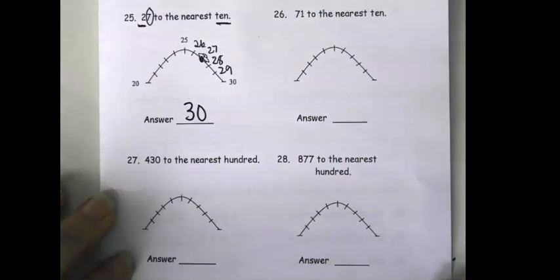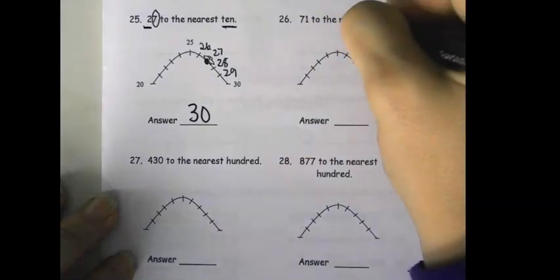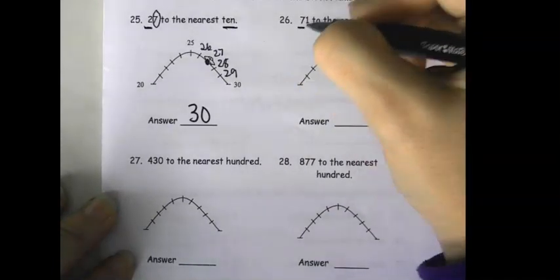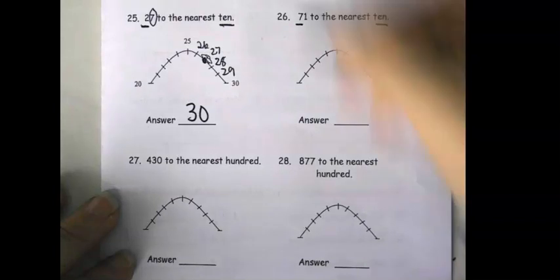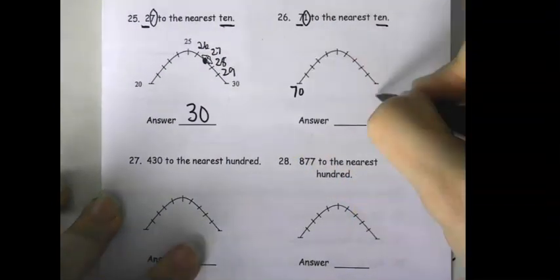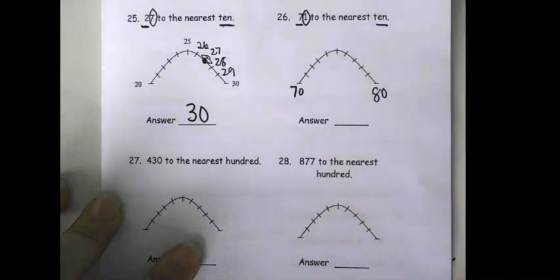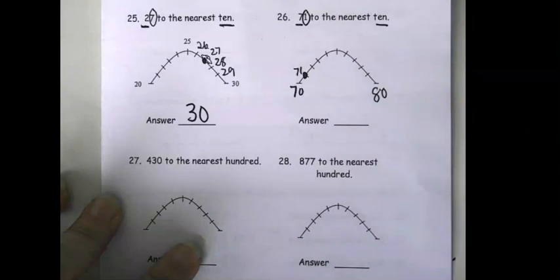Let's do the next one. It says 71 to the nearest 10. I'm going to underline my 10, and I'm going to be looking at the ones place immediately to the right, that number one. So, if I have 70 or 80 to choose from, and this is 71, clearly it's closer to 70 than it is to 80.